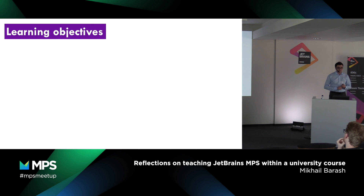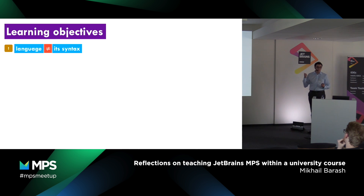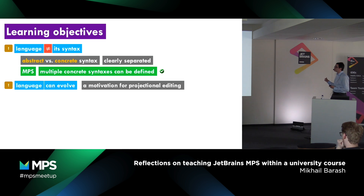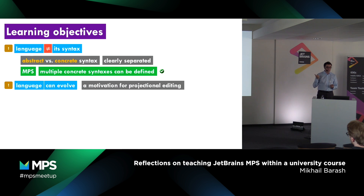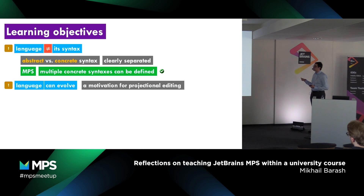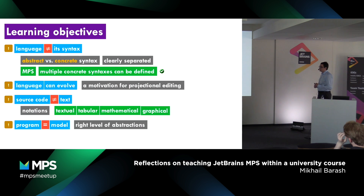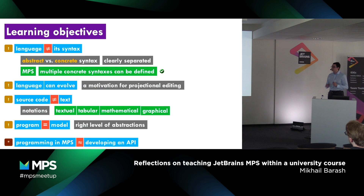And now the learning objectives — four things. First: a language is not its syntax, meaning we have a clear separation between abstract and concrete syntax, and MPS is great at supporting this. Second: a language can evolve, which motivates projectional editing and explains why it is difficult to add new constructs to a language like Java but easy to add them to languages defined in MPS. Third: source code is not necessarily text — MPS is great at supporting this. Fourth: a program is a model and a model is a program. And a bonus point: programming in MPS is something like developing an API.